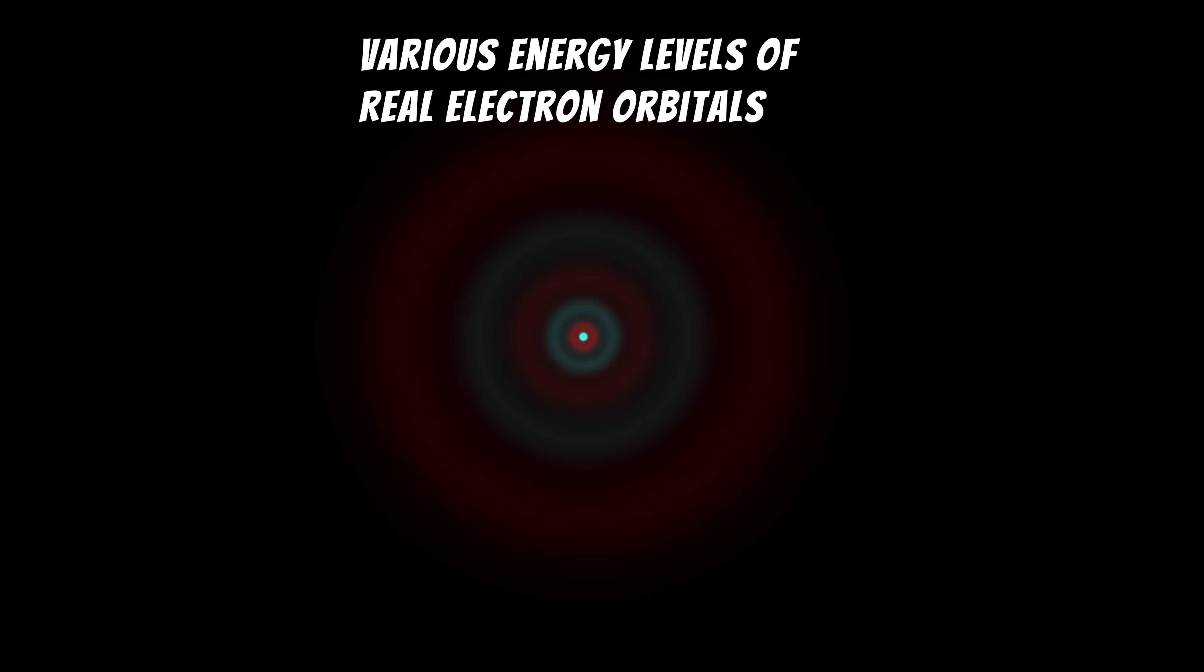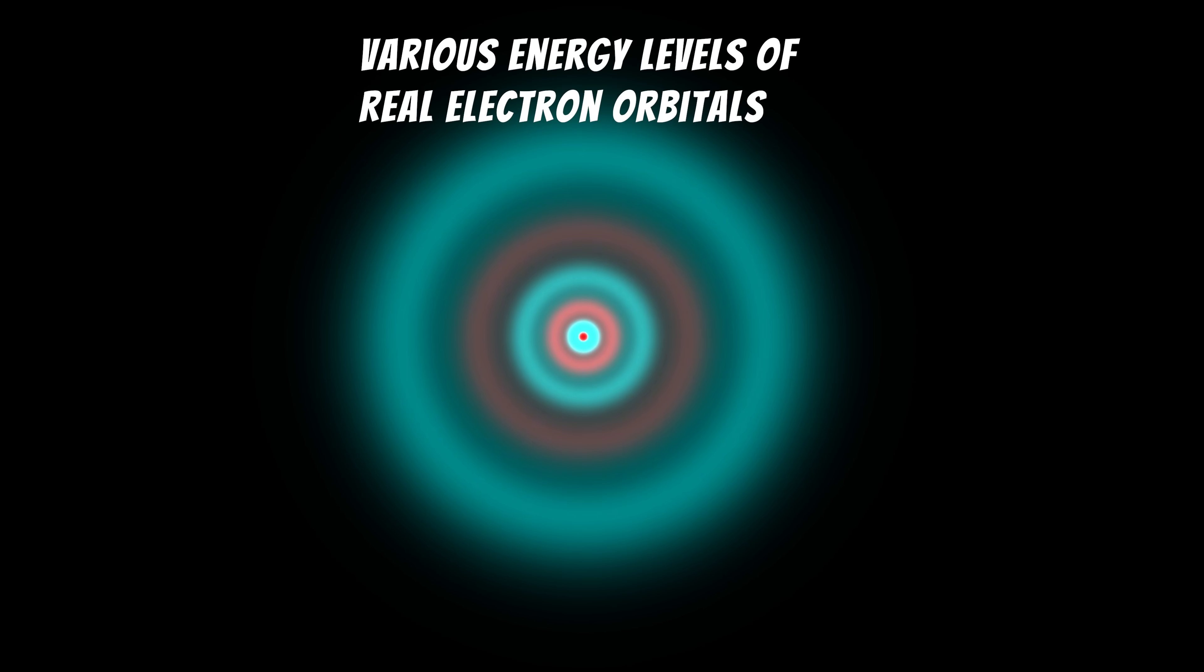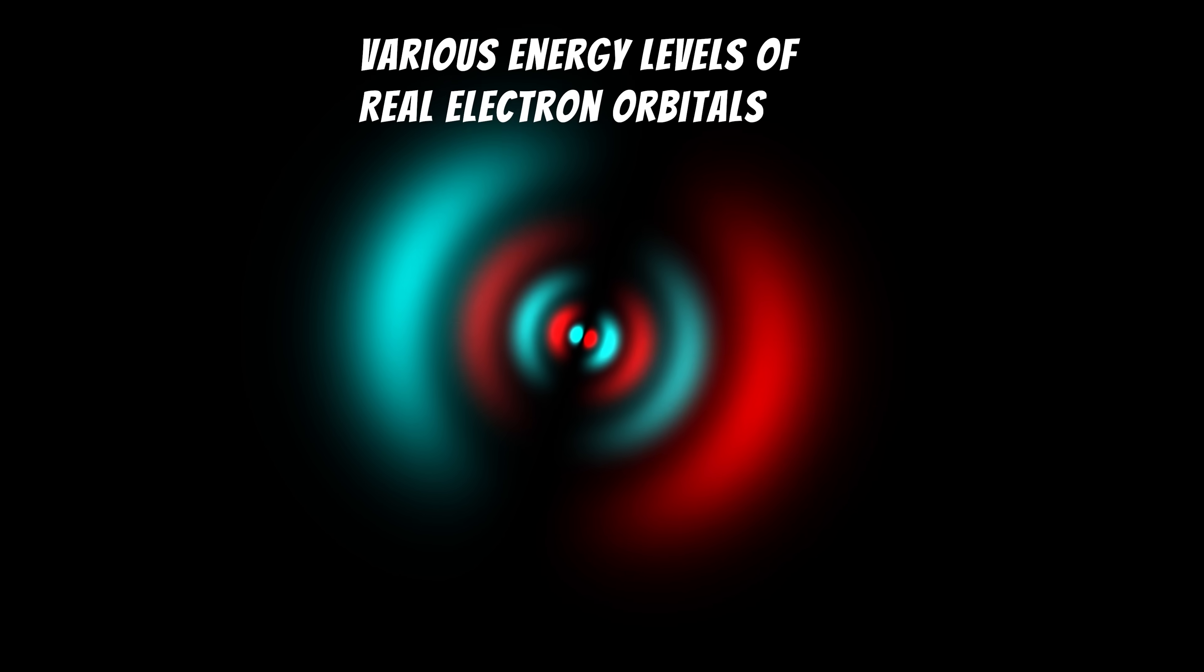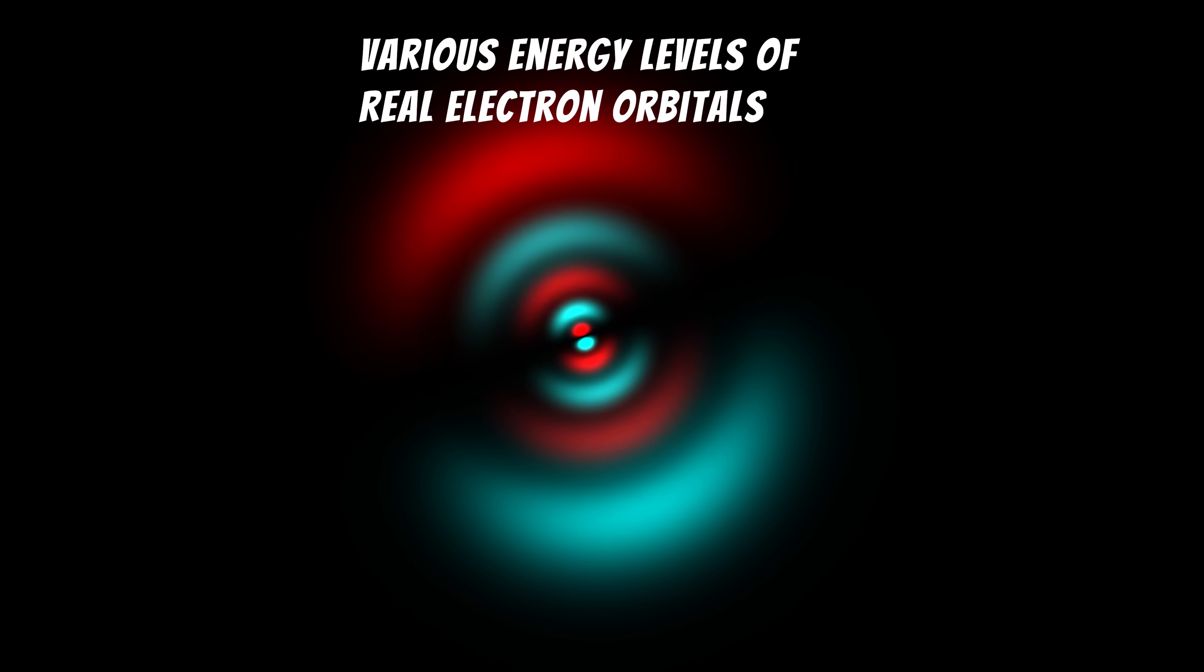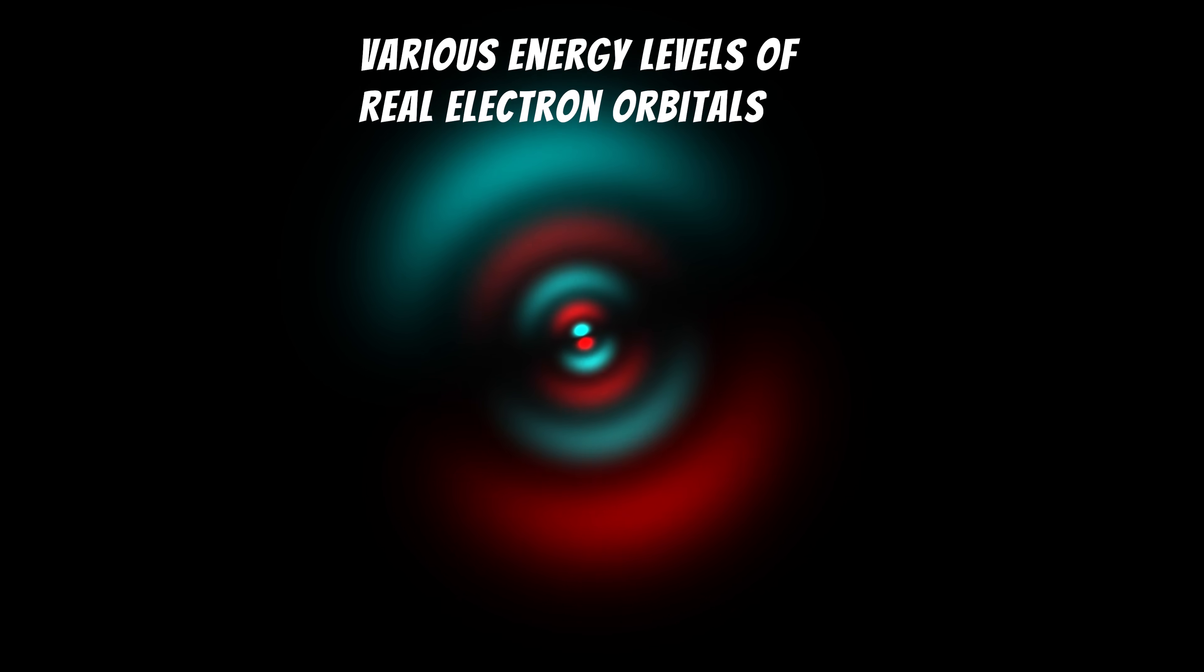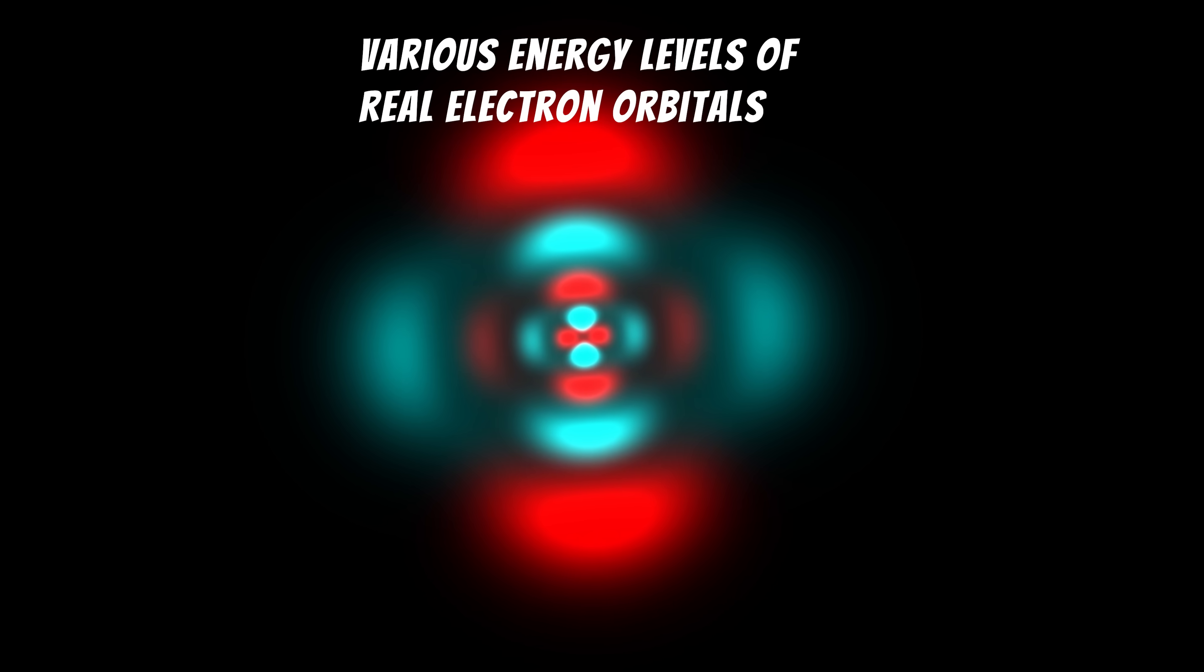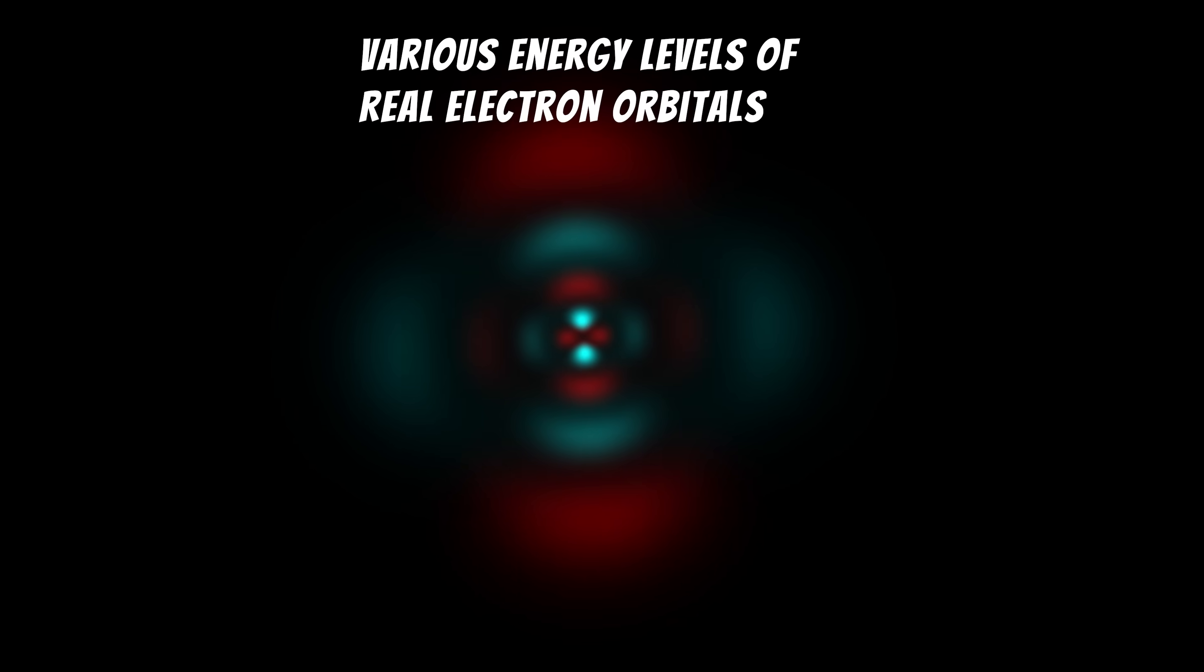Each electron exists in a superposition of possible momentum states until a measurement is made. What we do know is that if two electrons share the same orbital, their total angular momentum must sum to zero when the orbital is full. So the result is the same as if they were orbiting like I explained in this video.